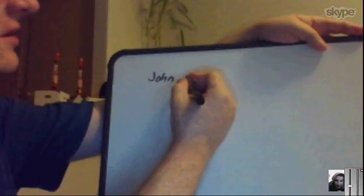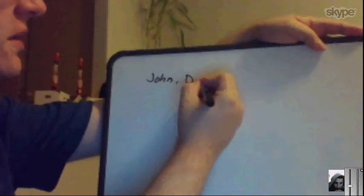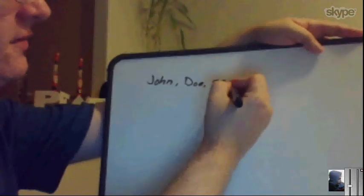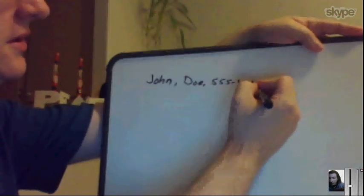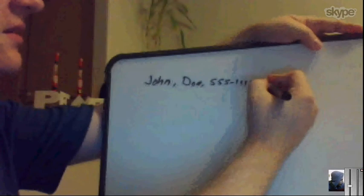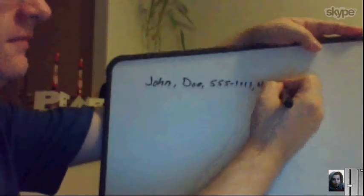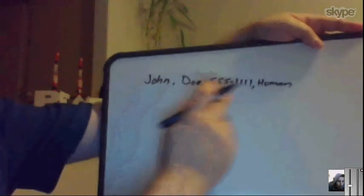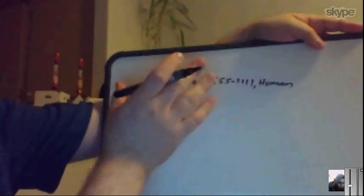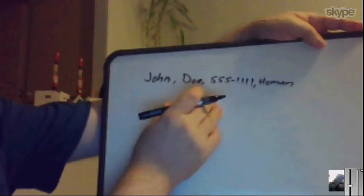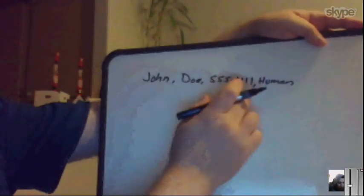So you've got John, you've got a comma, you've got Joe, you've got a phone number, 555-1111, then you've got a comma, and then you've got a human. Okay. So that's one, two, three, four different pieces of data all strung together in a single string separated by commas.